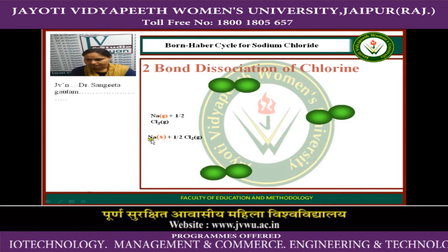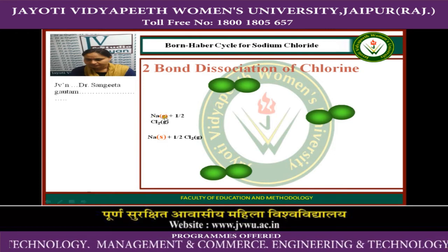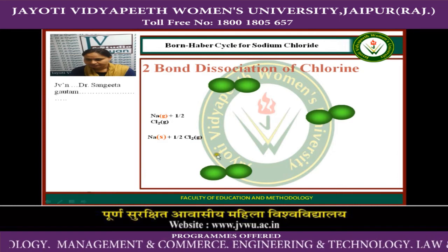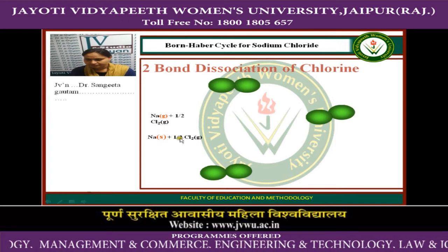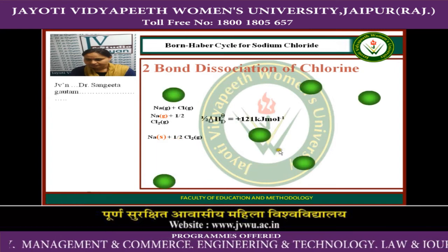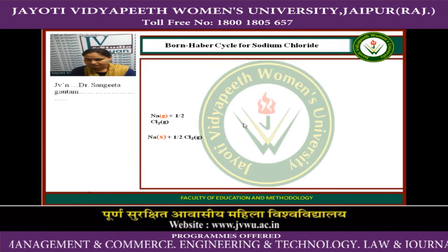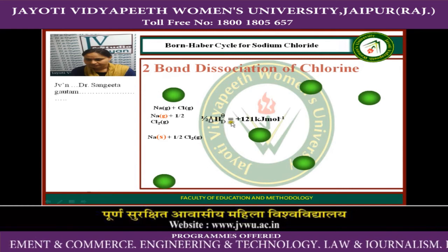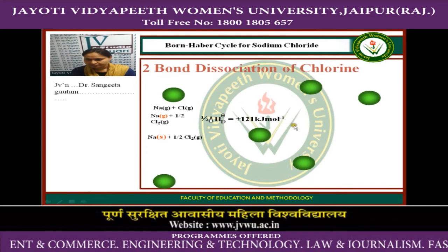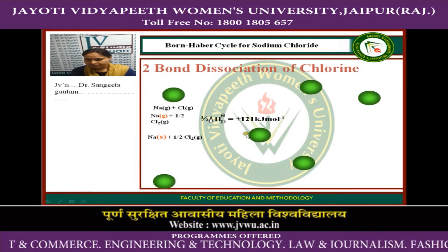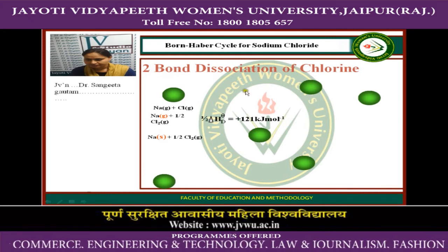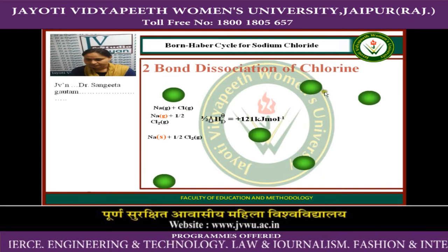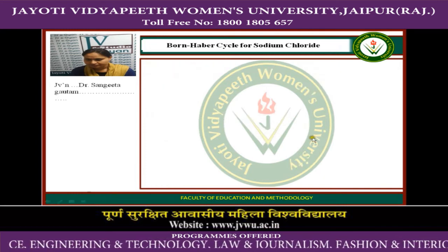Sodium is in solid state and chlorine is in Cl₂ gaseous state. The final reaction for this change is: sodium solid and ½ Cl₂ gaseous state. The bond dissociation energy for chlorine is 121 kJ per mole. You can see here the changes in chlorine — chlorine is in Cl₂ form and when we supply bond dissociation energy to chlorine molecules, they are converted into Cl atoms as the bond is dissociated.